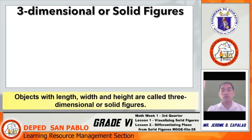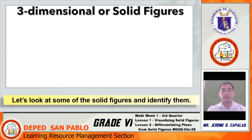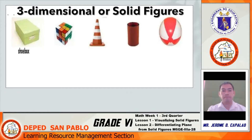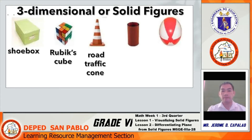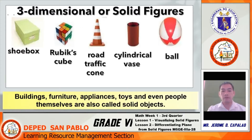Objects with length, width, and height are called three-dimensional or solid figures. Let's look at some solid figures and identify them. We have a shoebox, a Rubik's cube, a road traffic cone, a cylindrical vase, and a ball. Buildings, furniture, appliances, toys, and even people themselves are also called solid objects.